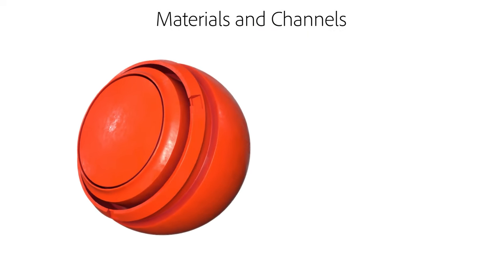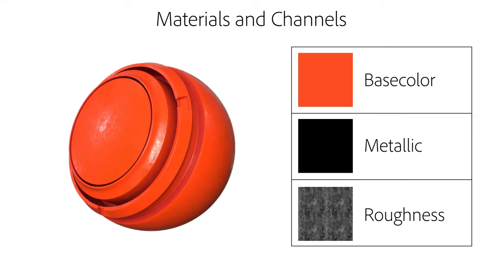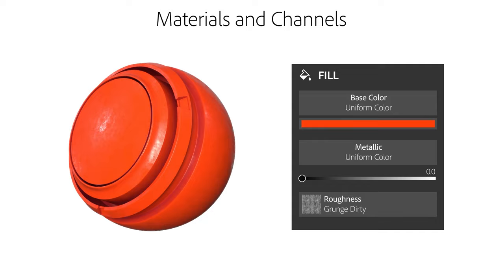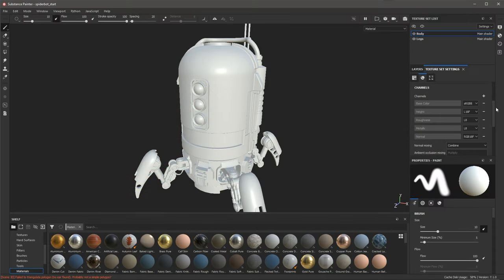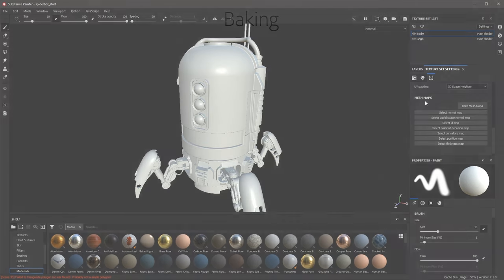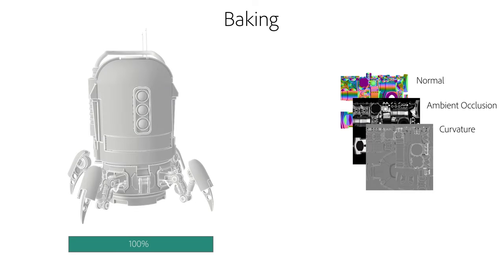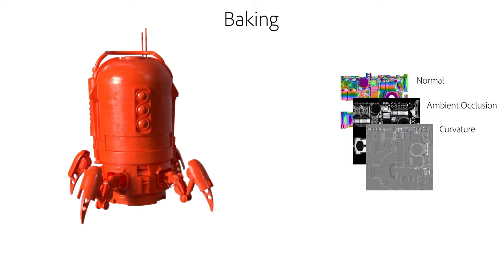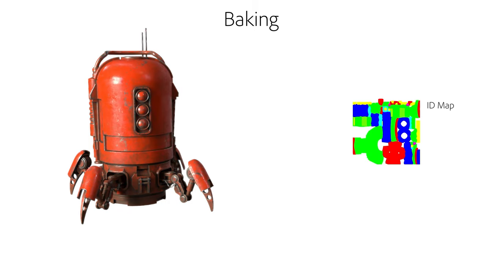Under texture set settings we can access the resolution and move up and down the resolution stack. We can also set a different shader instance or add additional channels to work with the shader. Materials can be broken down into individual channels — each channel represents a material property like color, metallic, or roughness. Fill layers can act as a material in the layer stack, filling one or more channels with a texture or a uniform value.